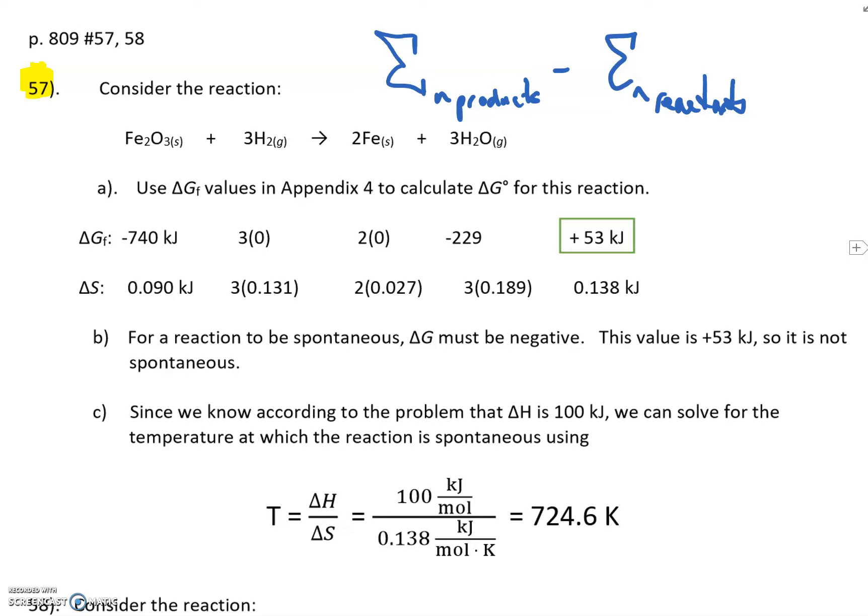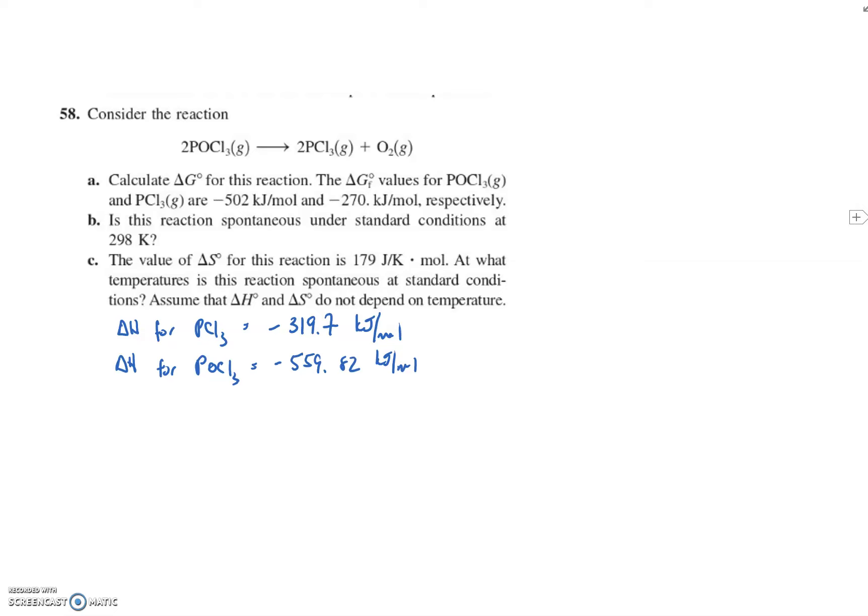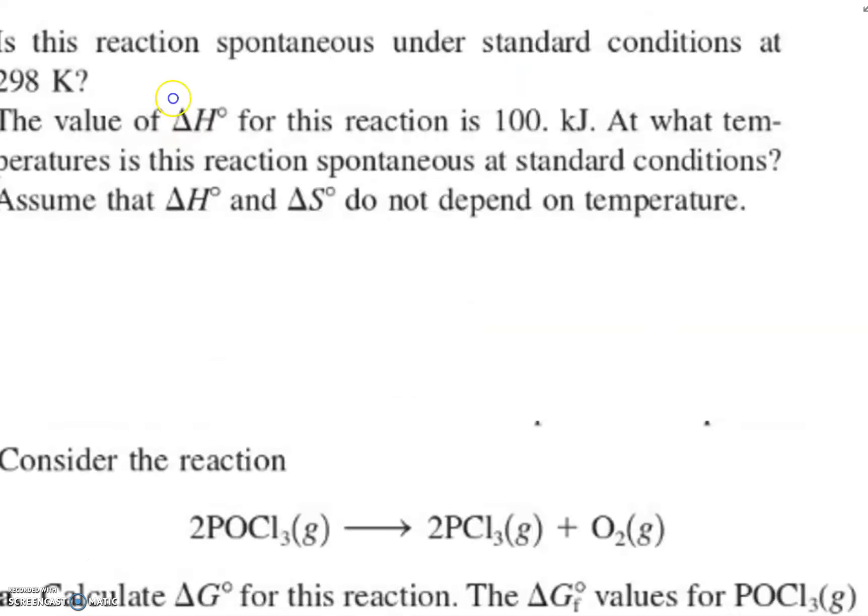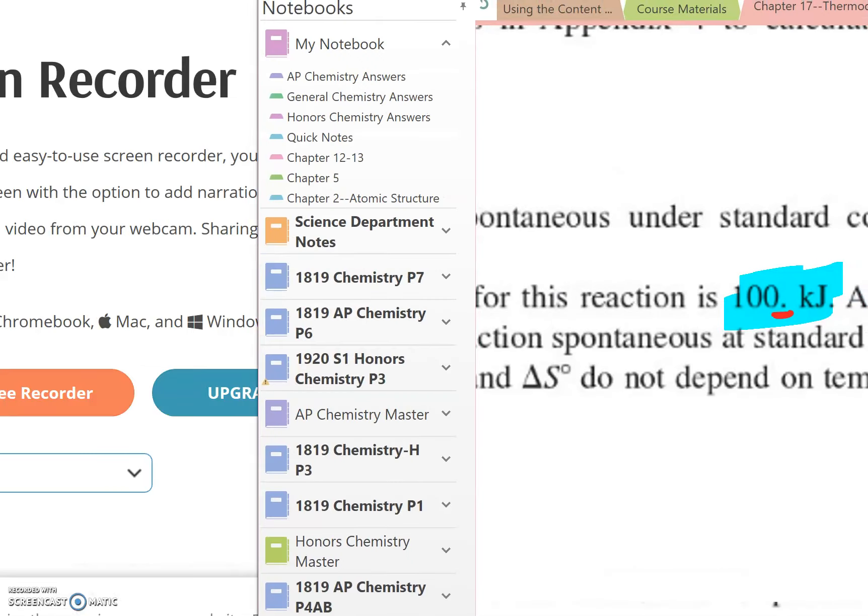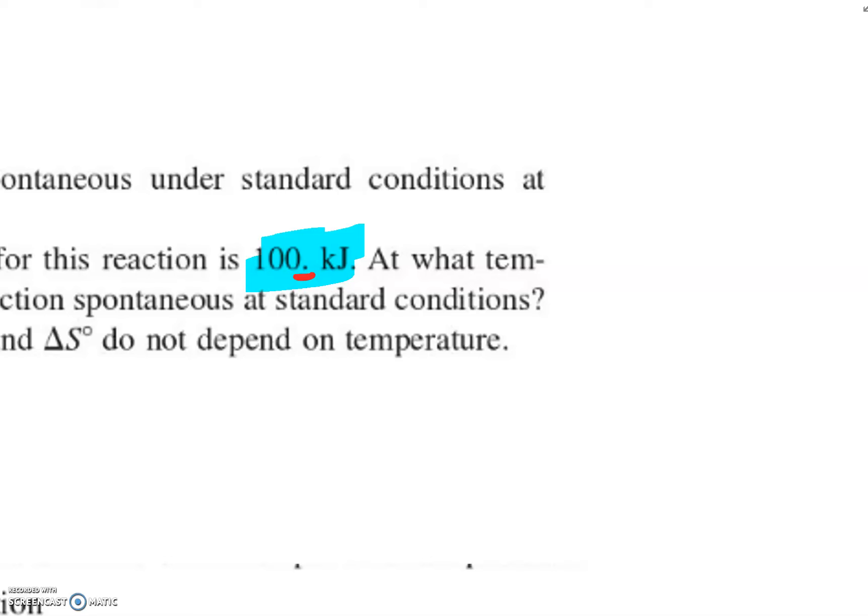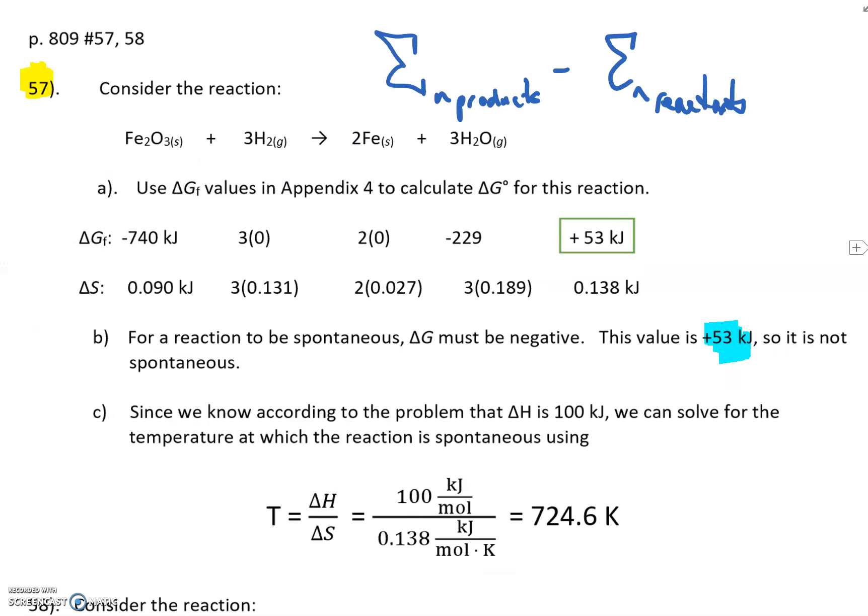We'll use those in a little bit. So for part B, it says, is the reaction spontaneous delta G has got to be negative. Well, we got a value of 0.53. It is not spontaneous. But the problem tells us, we're looking at the problem, it tells us the value of delta H of 100 kilojoules. Remember that little dot? This guy is for significant figures and tells us that there's three significant figures. I'm not going to worry about that. But we know that the value for delta H is 100 kilojoules.